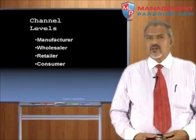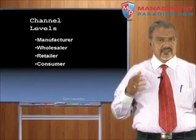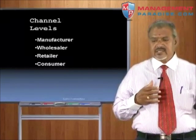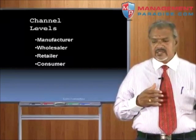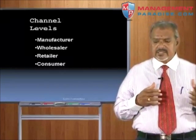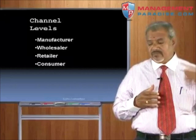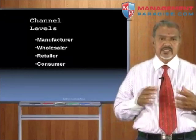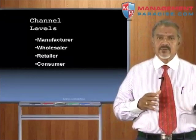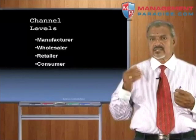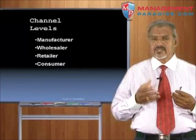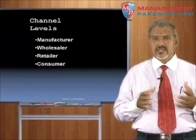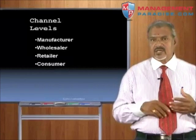Channel levels: the manufacturer is at the top level, then the wholesaler, then the retailer, then the consumer — four levels. These levels will vary depending on the type of product itself: technical products, consumer goods, FMCG, electronics, automobiles. Depending on various factors, these channels may vary.